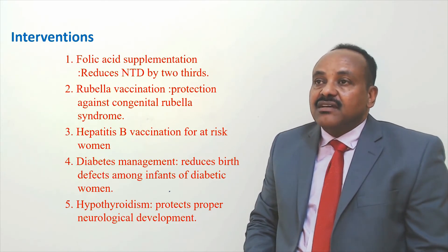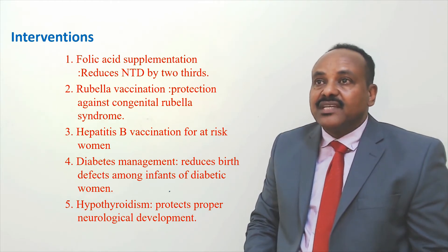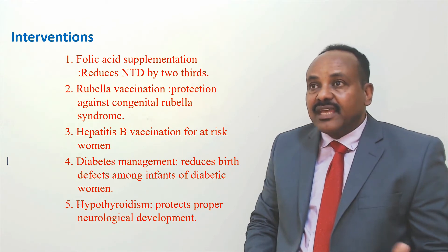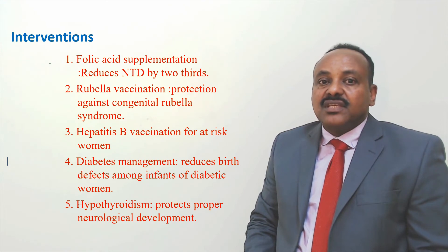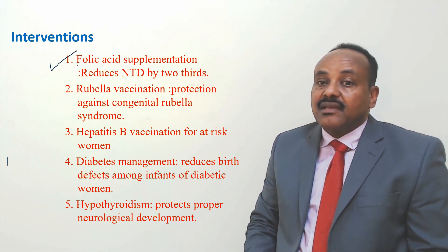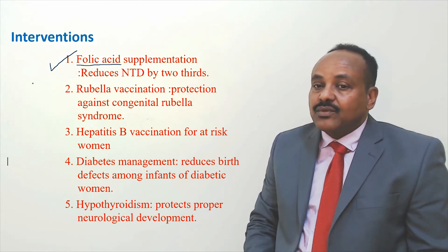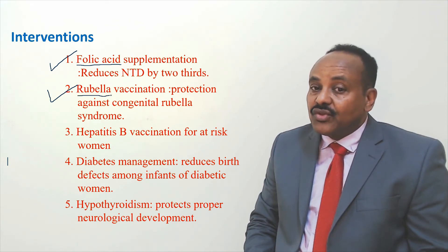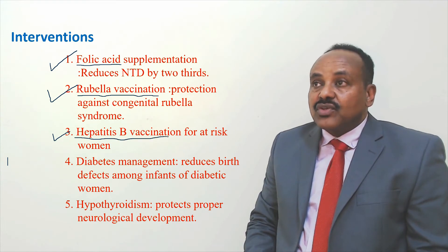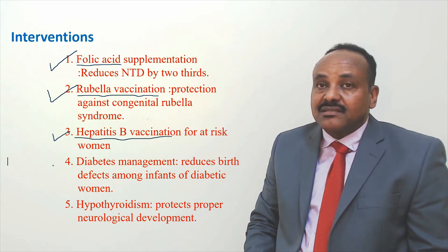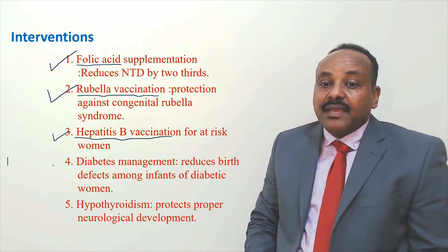Regarding interventions: if we discover any risk or problem, we should intervene to prevent harm and improve pregnancy outcome. One important intervention is folic acid supplementation — neural tube defects are reduced when folic acid is used. Rubella vaccination is needed to protect against congenital rubella, which is very dangerous to the fetus. Hepatitis B vaccination is needed for women at risk. For those with hypothyroidism, we need multidisciplinary collaboration with an endocrinologist to adjust and optimize her condition before she gets pregnant.